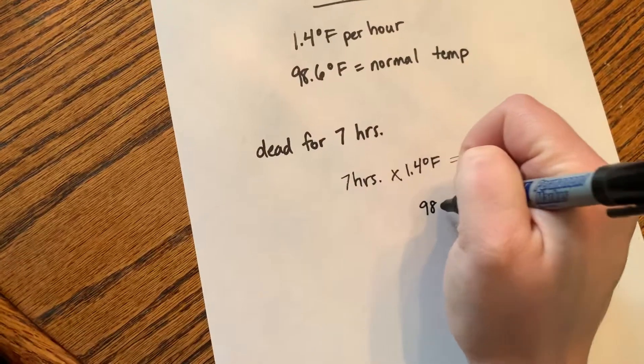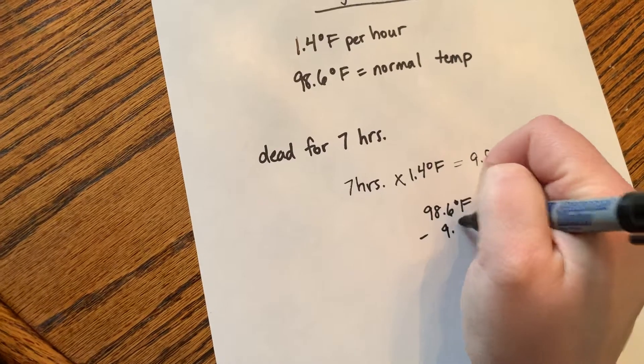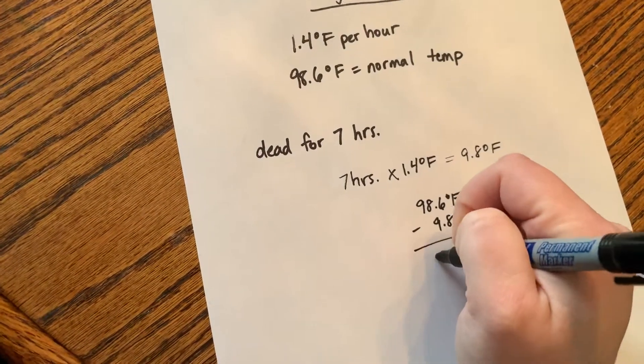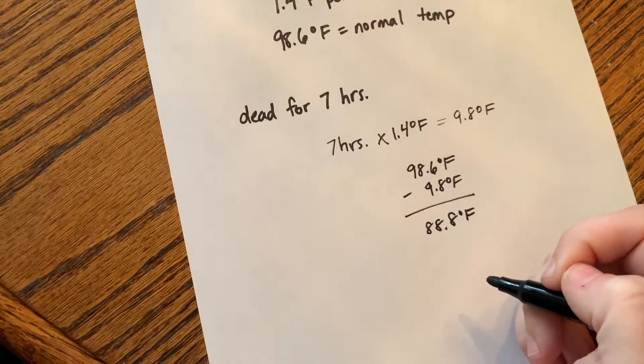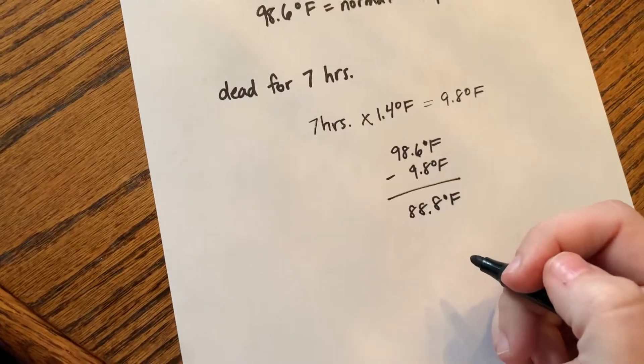So then we'll take our normal body temperature, and we'll subtract 9.8 degrees Fahrenheit, which gives us 88.8 degrees Fahrenheit. So that should be the temperature of the body when we find it if the person has been dead for seven hours.